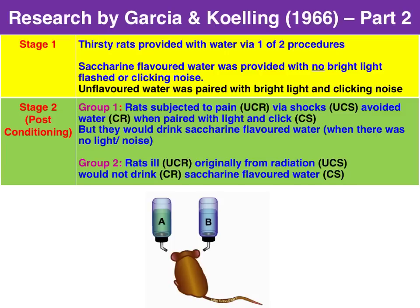The group of rats that were originally shocked — that is, where the electric shocks were paired with the light and click noise — now avoided the water when it was preceded by the light and the click noise. The light and click noise being the conditioned stimulus, the conditioned response being the rats avoiding the water. The association had been made between the light and click sound with pain.